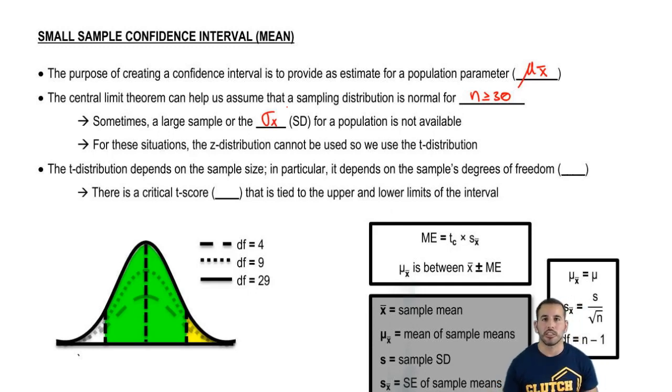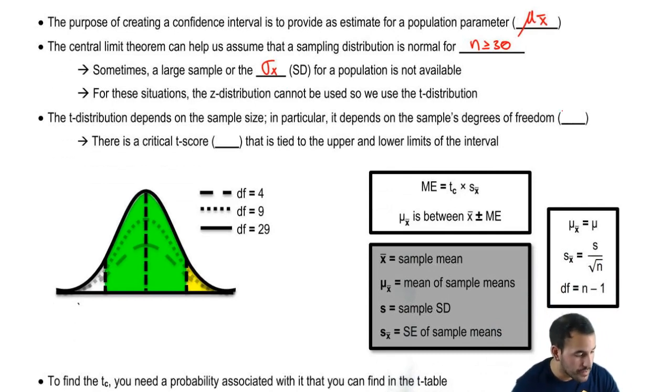But with the t distribution, it basically allows us some flexibility. So we don't have to have a sample size of 30 or more. And basically, that t distribution, the shape of it depends really on the sample size. And technically, to be more particular, degrees of freedom, df.